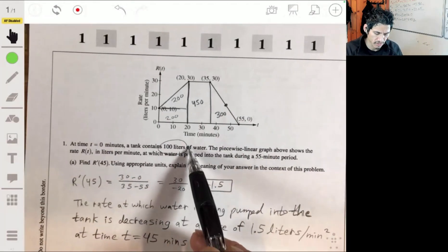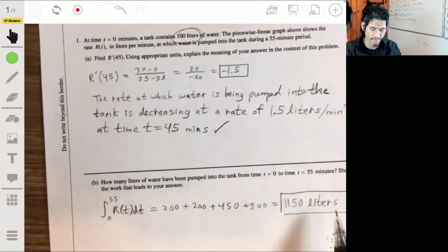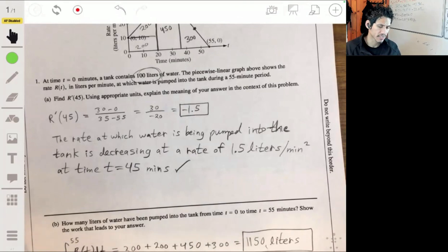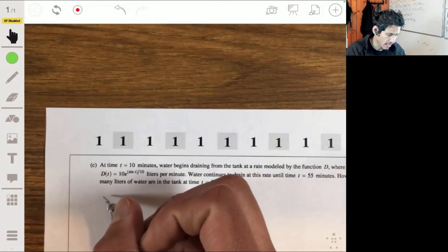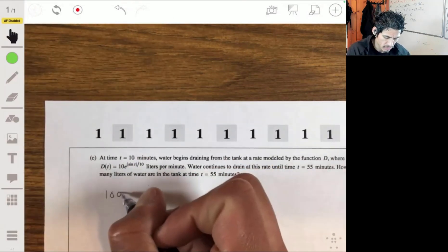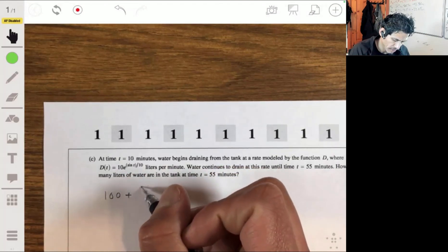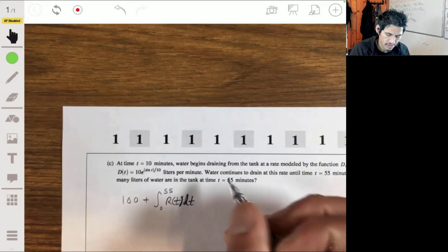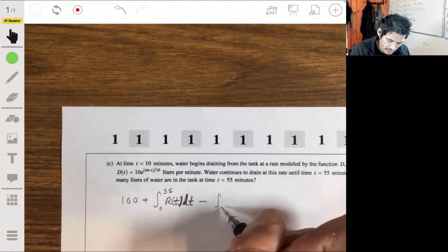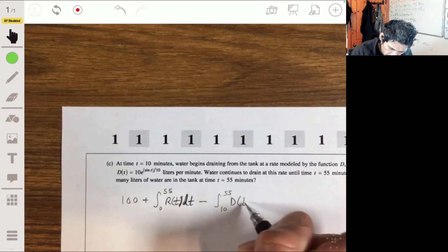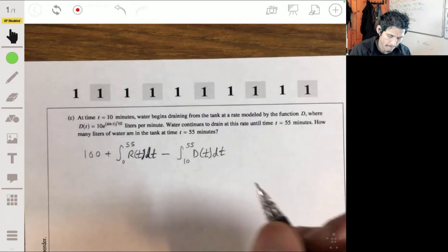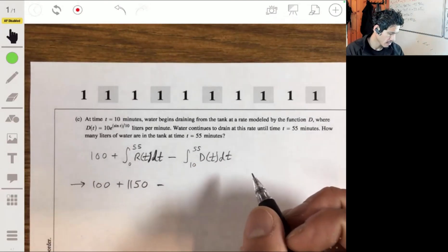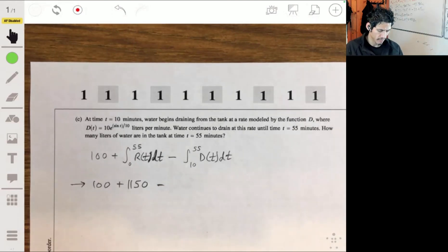So flashing back to the beginning of the problem, we're told that it starts with 100 liters of water to begin with. Then we get added 1150. So then we have 1250 minus however much gets pumped out. Let's set that one up. We got 100 plus, and maybe we just write the integral from 0 to 55 in case they're thinking you're guessing. And then from here we're going to subtract the integral from 10 to 55 of d(t) dt. 100 plus 1150 minus you can use your graphing calculator to integrate that. And you're going to get about, let's see.